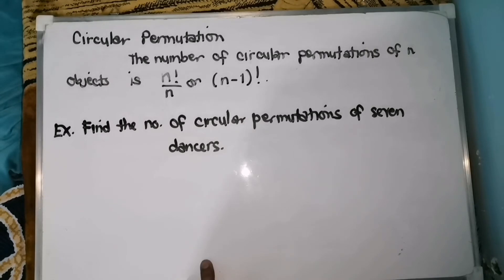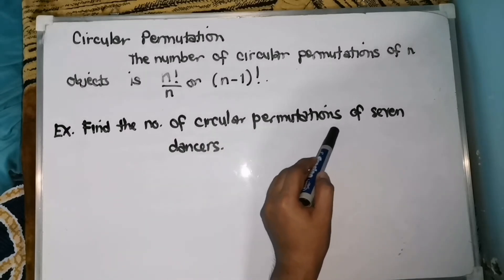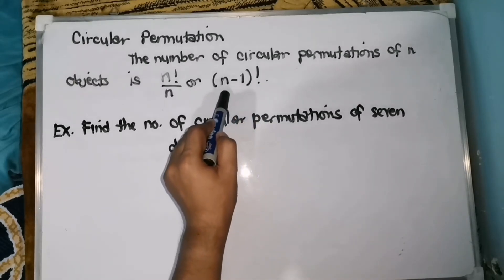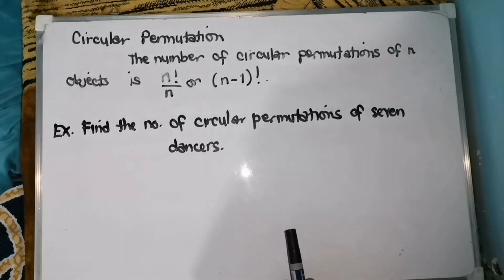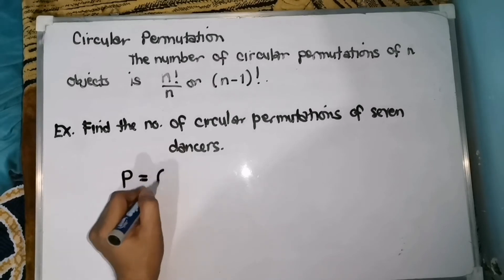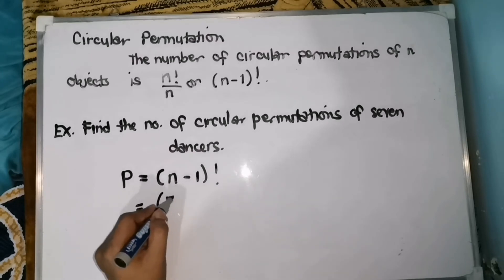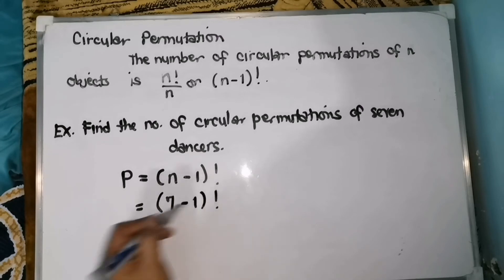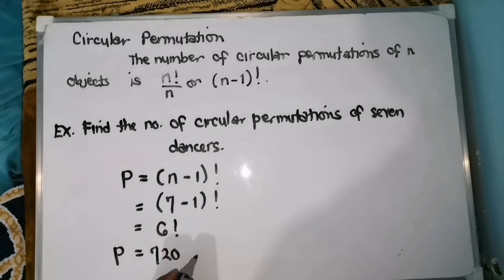So, let's have another problem. Find the number of circular permutations — nandito na yung ating word na circular permutations. Of course, ang gagamitin nating formula ay the quantity n minus one factorial of seven dancers. So, kukuha natin yung number of circular permutations ng seven dancers. That is P equals the quantity n minus one factorial — n is seven because there are seven dancers — minus one factorial equals seven minus one is six factorial, equals 720. So, therefore, there are 720 circular permutations.